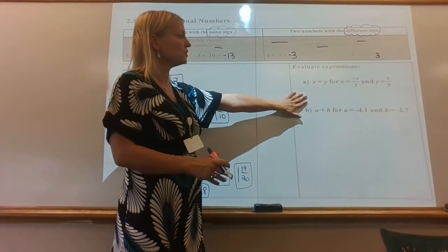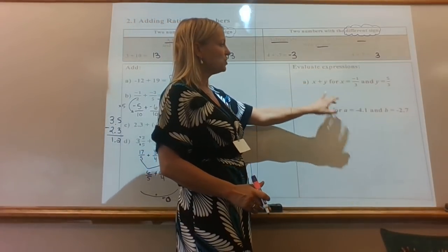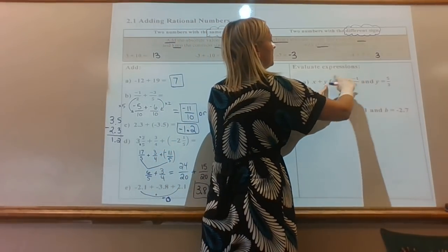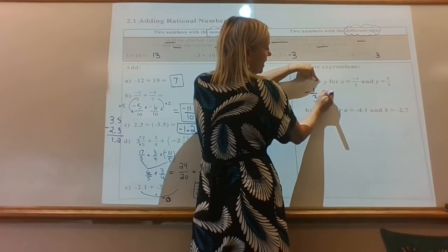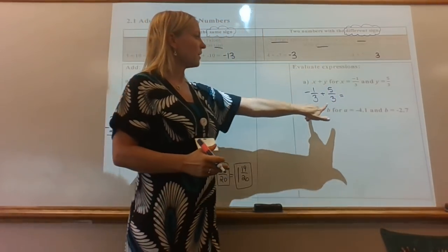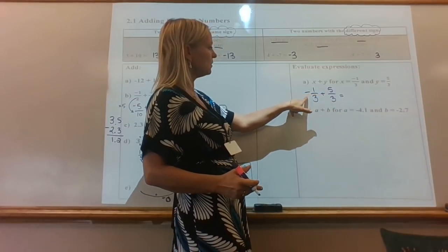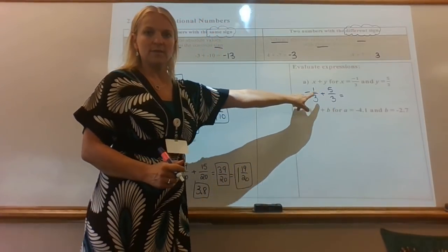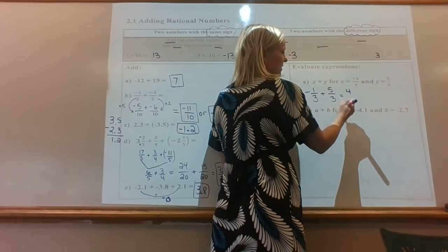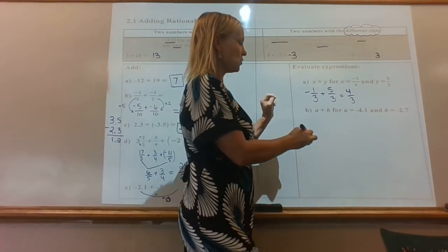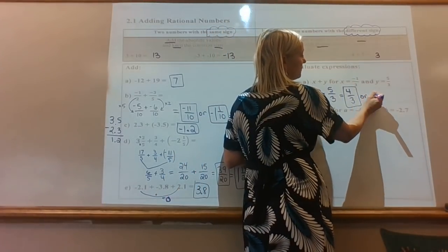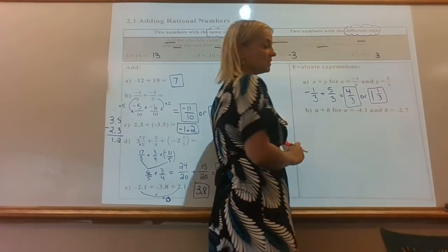We are almost done — two more questions. These are evaluating expressions, which means figuring out what the expression equals when you plug those numbers in. So x is negative one-third plus y is five-thirds. We already have a common denominator. Are they the same or different? Negative and positive — different signs. So I subtract: five take away one makes four. Keep the denominator of three, so the answer is four-thirds. As a mixed number: three goes into four one time with one left over, so 1 and one-third is also acceptable.